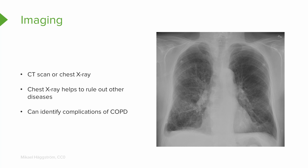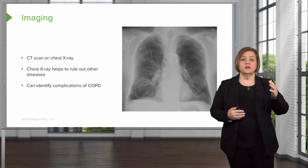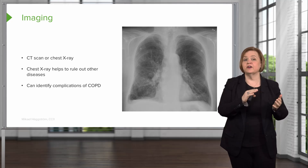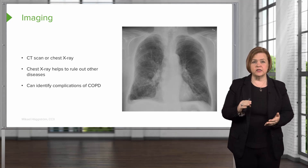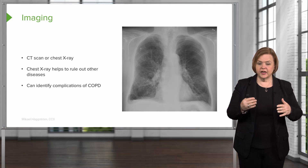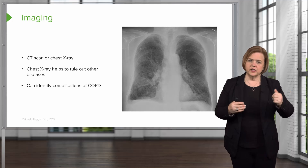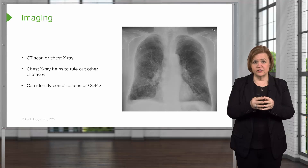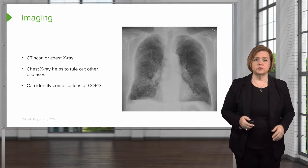A chest x-ray also helps us identify complications of COPD. We want to know — do they have pneumonia? Do they have a pneumothorax, where air has caused collapse of the lung? Or are they in heart failure? So chest x-ray can help us rule out other causes or identify complications of COPD. You'll notice some of the things appear in both lists — that's why it's never just one test. You have to look at all pieces of information to put together the puzzle and figure out the underlying cause of the patient's respiratory problems.